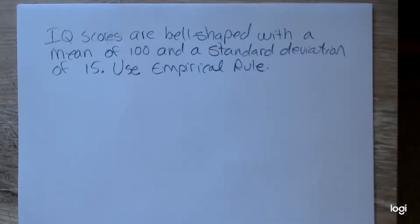I'm going to use the empirical rule to find the interval that contains 68% of the data and 95% of the data. For this example, I'm working with IQ scores. IQ scores are bell-shaped with a mean of 100 and a standard deviation of 15.